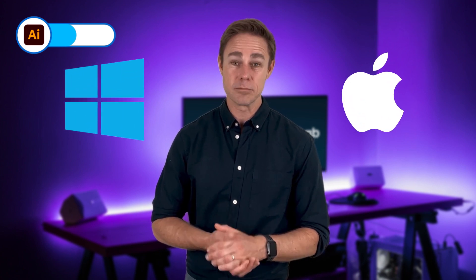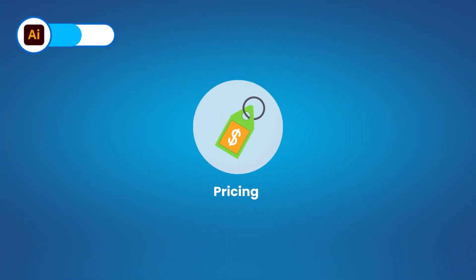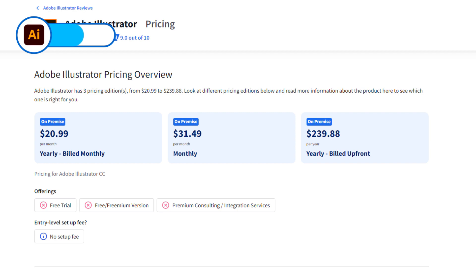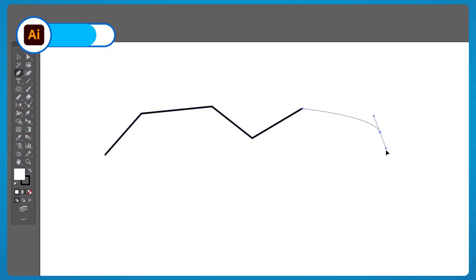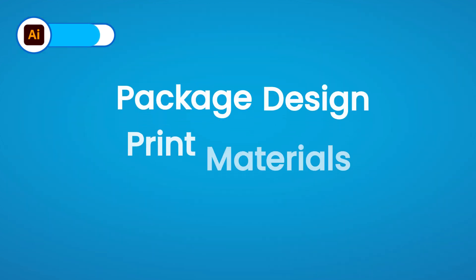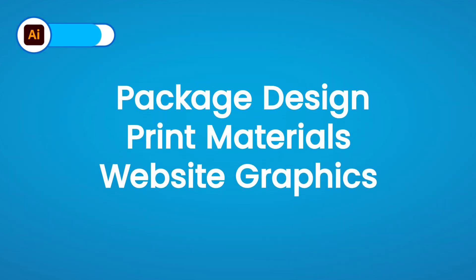Similar to Photoshop is the pricing — the software costs $20.99 a month. Unfortunately there is no cheaper alternative, but the price pays not just for the app but also for cloud storage space, technical support, and a host of plugins to better suit your design needs. Illustrator is best suited for those who want to get into the technical side of design, including package design, print materials, and website graphics.